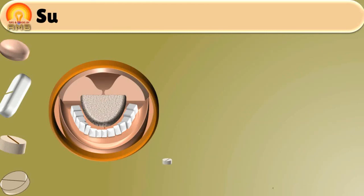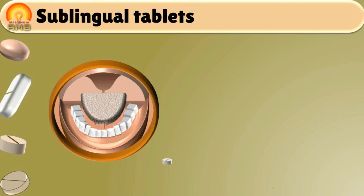Next type is sublingual tablets. It is the word coming from two words: sub means below and lingual meaning tongue. Thus these are the tablets which are placed under the tongue to achieve quick systemic effect by rapid absorption through the mucus membrane.